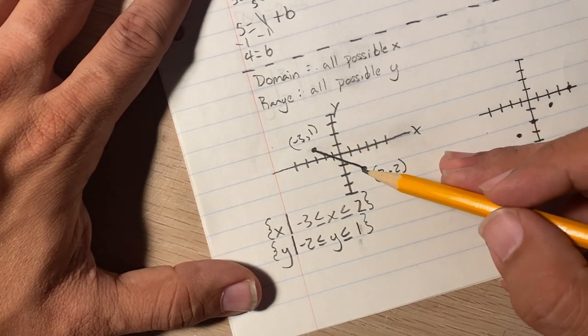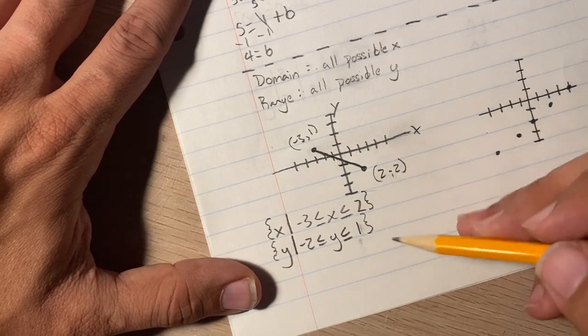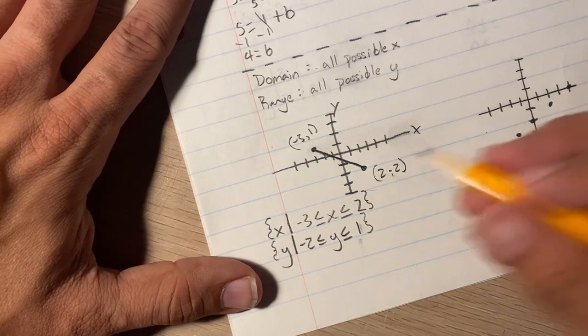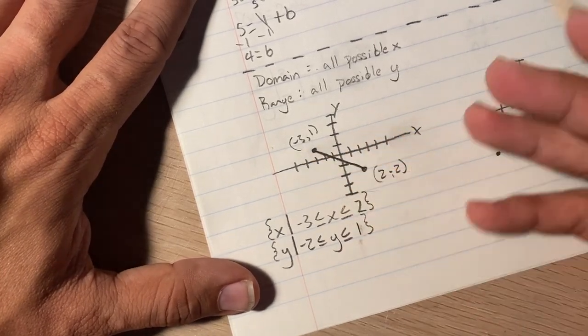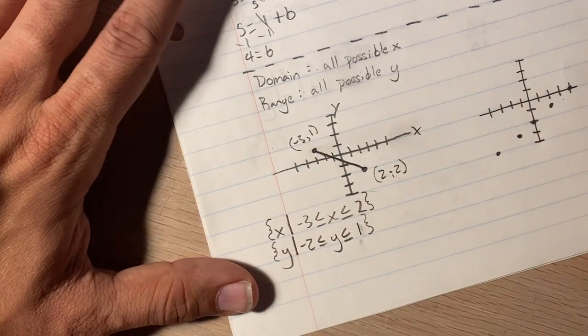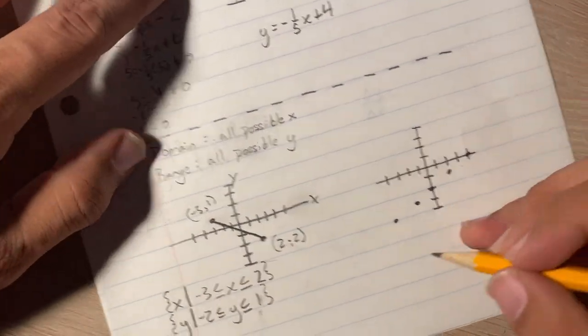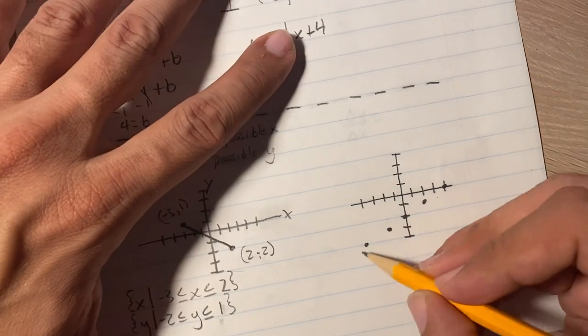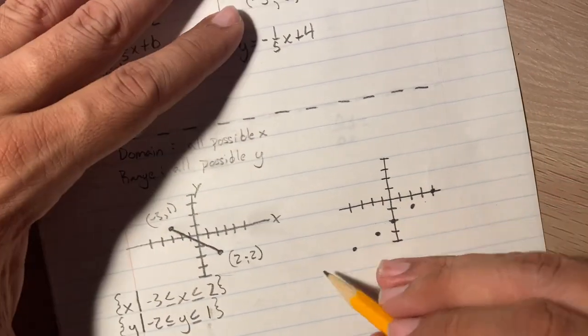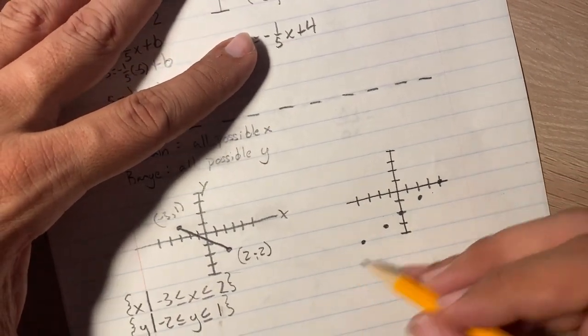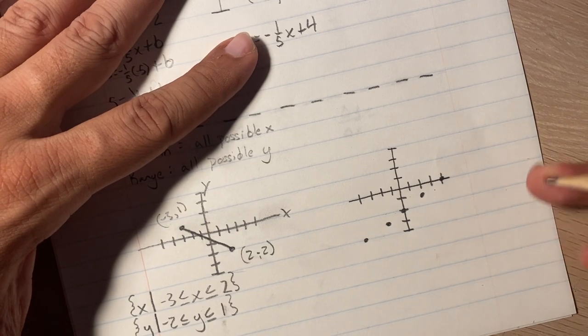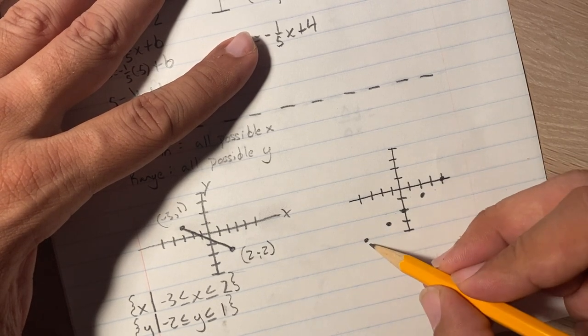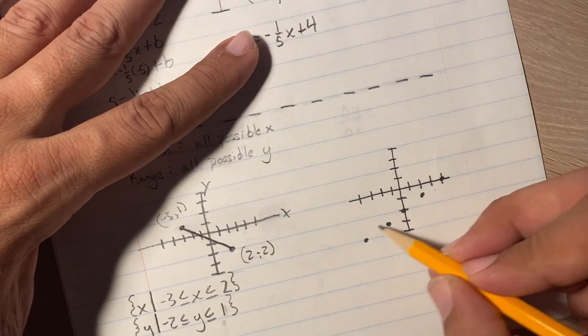So that's domain and range when the line is continuous like this. If there was an arrow going down, then I would have changed some stuff into infinity. Or if it's going this way, negative infinity for the x. All right. So this one here. So this one is different. It's not continuous. I have to be specific about what I write for the domain and the range.